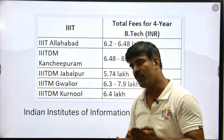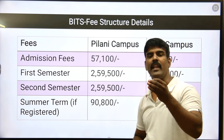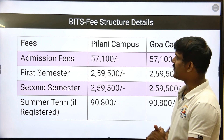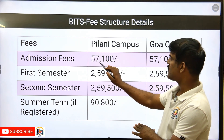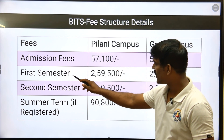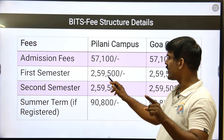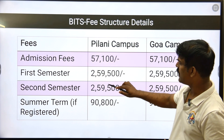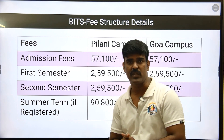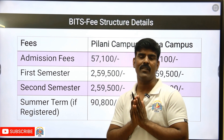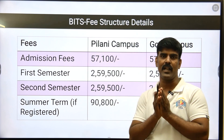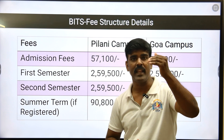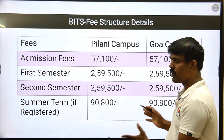Apart from that, there is a hostel fees. Coming to private universities, for BITS Pilani — BITS has 4 to 5 campuses. Here are the admission fees: first semester and second semester. They will be collecting 57,500 as admission fees. First semester fees are 2,59,500, and second semester fees are also 2,59,500. So overall you will get around 6,00,000 in fees. Plus hostel fees of approximately 1,00,000, so it becomes 7,00,000 to 8,00,000 per year. For 4 years of BITS Pilani, it would be approximately 28,00,000 to 35,00,000. On average, 7,00,000 per year. This is BITS Pilani.